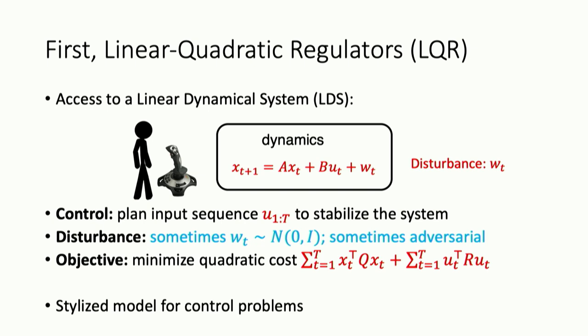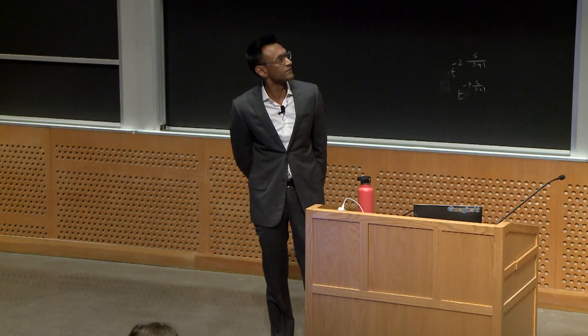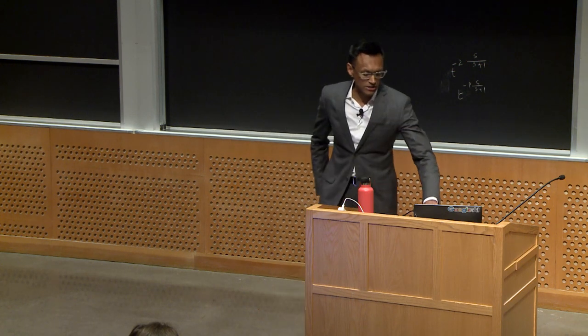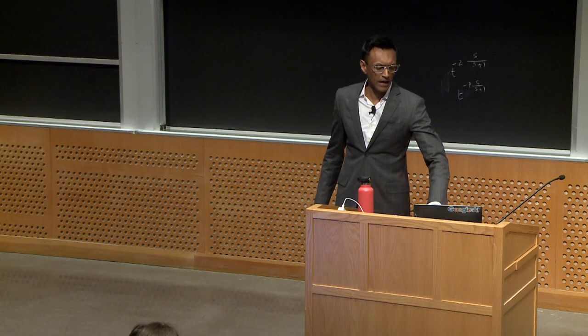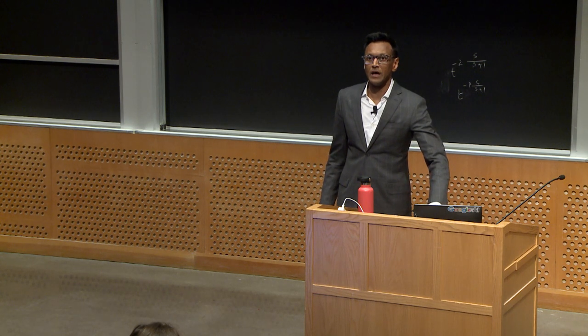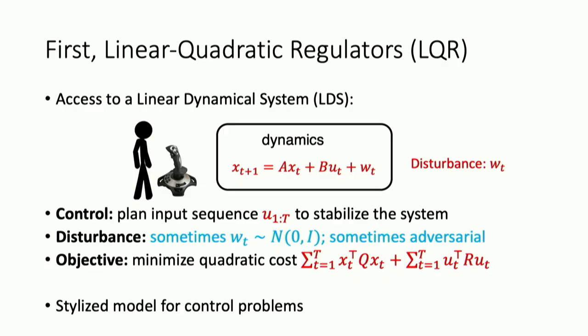Just to make sure we're familiar with notation — I'm normally an SA kind of guy, but working in controls has moved me to XU notation — our dynamics of some state vector x_t: the next state vector is going to be some linear combination of a previous state vector by A, plus some matrix B times a control, plus some kind of disturbance. Typically our goal is to come up with some sequence of controls chosen adaptively to minimize some objective function related to some kind of stability of the system.